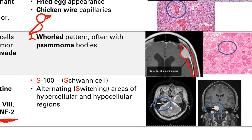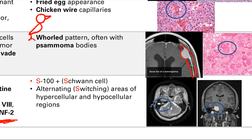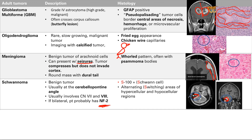Here's imaging of the cerebellopontine angle with the tumor circled. On histology, it's going to stain positive for S100. There are going to be alternating areas of hypercellular and hypocellular regions.